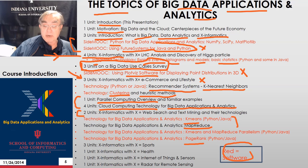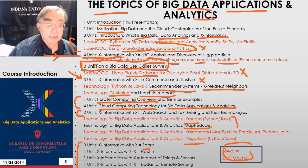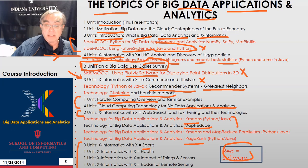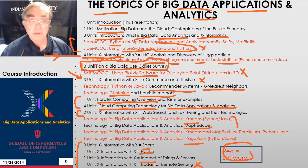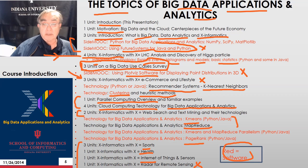Then we do another application, PageRank, which is famous because it was the critical innovation that made Google a dominant company. The course ends with four different values of X: sports, which in some of my classes is the most popular; health; sensors and remote sensing; and radar analysis. So in this class, you will learn a bit about technology, a bit about lots of applications, and why big data is critically important.